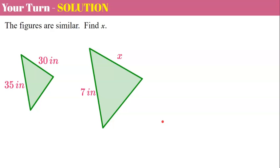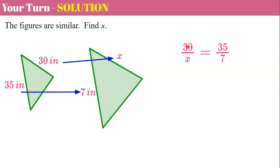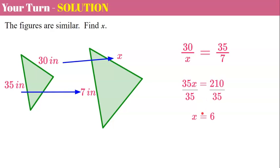Now let's identify our corresponding sides: 30 corresponds to x and 35 corresponds to 7. Our proportion is 30 to x equals 35 to 7. Using cross product property, 35 times x equals 30 times 7, which is 210. Divide both sides by 35 and x equals 6 — our answer is 6 inches.